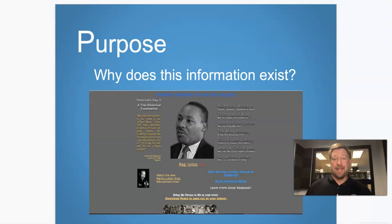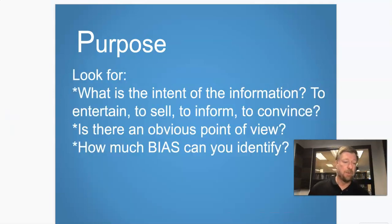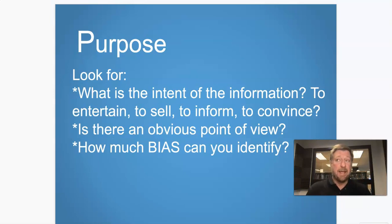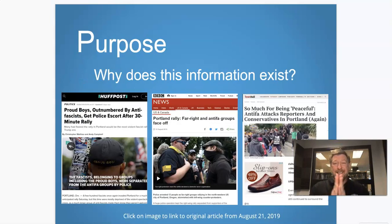The last one in the CRAAP test is Purpose — why does this information exist? Using the Martin Luther King example again, that website is designed to sway your opinion about Martin Luther King. Things to look for in Purpose: what's the intent — is it to entertain, to sell, to inform, to convince, to sway you to a certain point of view? Is there an obvious point of view, and how much bias can you identify?